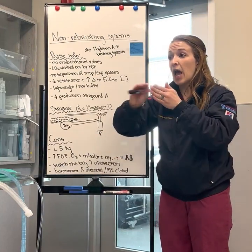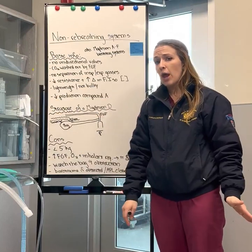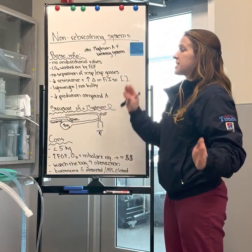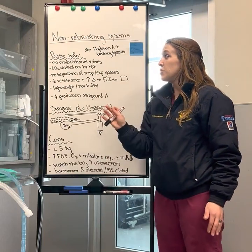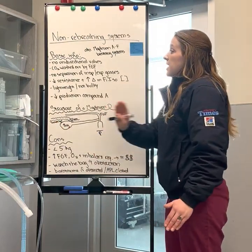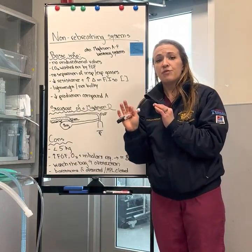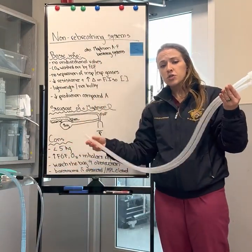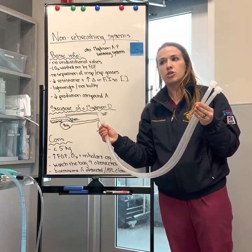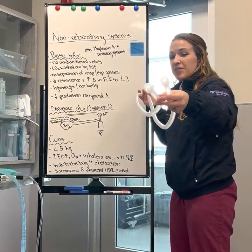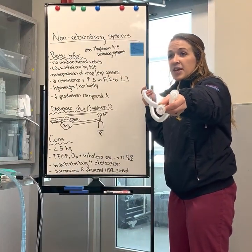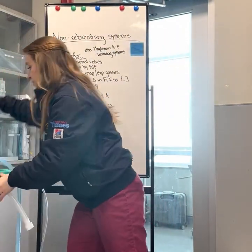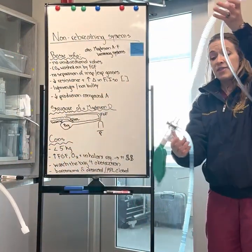The high fresh gas flow of oxygen flushes out the CO2 and directs it toward the scavenging system. Because CO2 is being washed out by the fresh gas flow, we also have no direct separation of inspiratory and expiratory gases. In a pediatric circle — a re-breathing system appropriate for most patients under 10 kilos — there are two different limbs going to the inspiratory and expiratory sides, each with their own unidirectional valves, so those gases are relatively separate from one another.